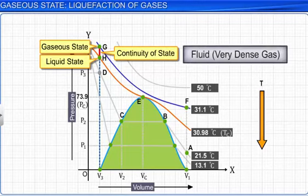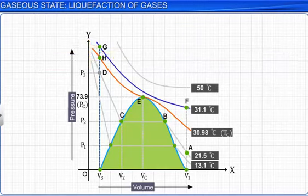Thus, a liquid can be viewed as a very dense gas. A gas can be liquefied below critical temperature by applying pressure, and then it is called the vapor of the substance.